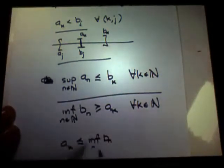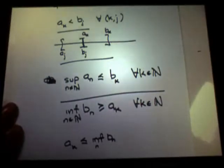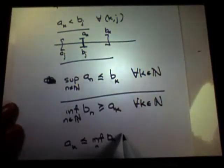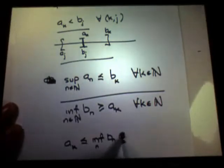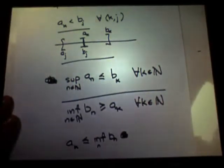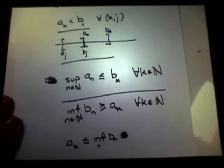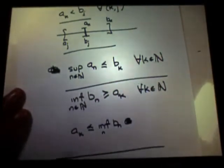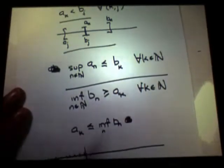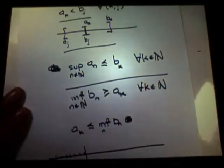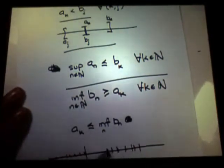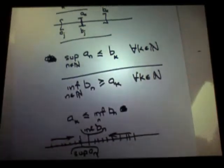I would like to, well, to be clear. Let me draw a picture. Here are the A's marching up. And here's the supremum of the ANs. And here are the B's marching down. And this is the infimum of BNs. The BNs are coming down and the ANs are going up.